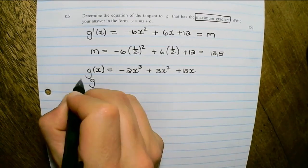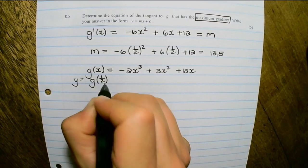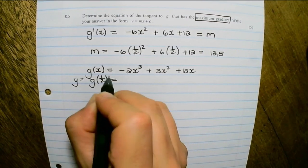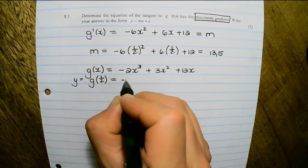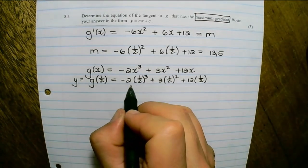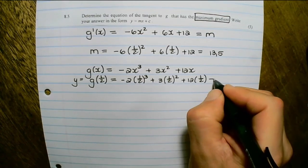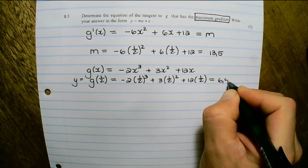And g(x) represents the y value. And we want to find the y value where x equals one half. So I substitute x with one half and I find that the y value is 6 and a half.